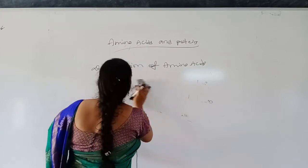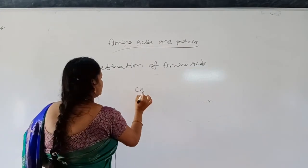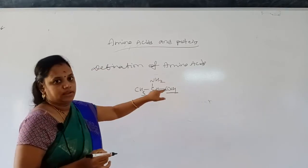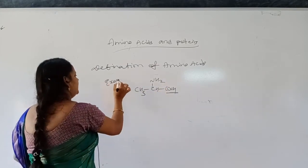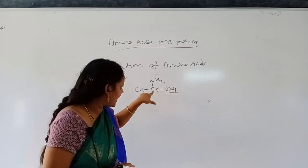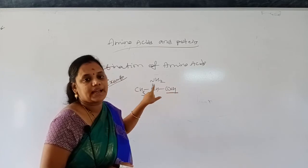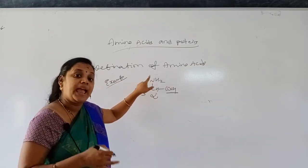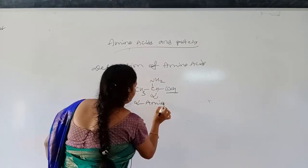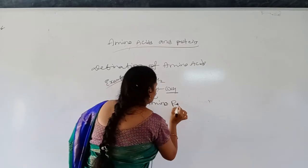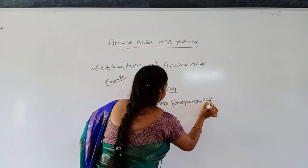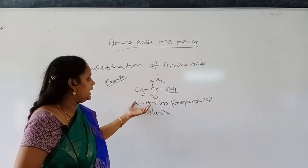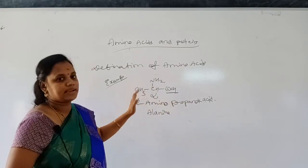Example: CH3-CH(NH2)-COOH. The carbon which is adjacent to the functional group is called alpha carbon. For the alpha carbon you have NH2 group — amino group — so the name will be alpha amino. There are three carbons, so it is alpha amino propanoic acid. We also call this amino acid as alanine. This is the IUPAC name: alpha amino propanoic acid. This is an alpha amino acid.